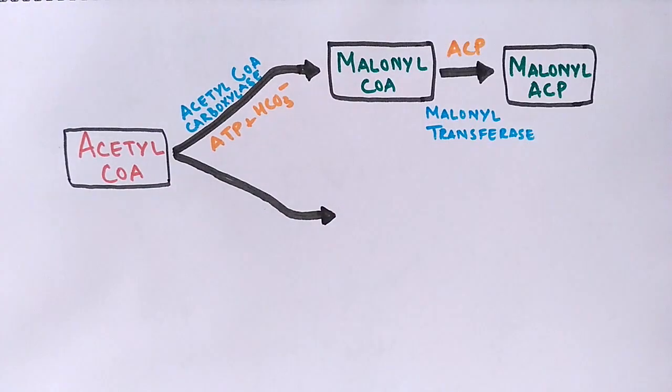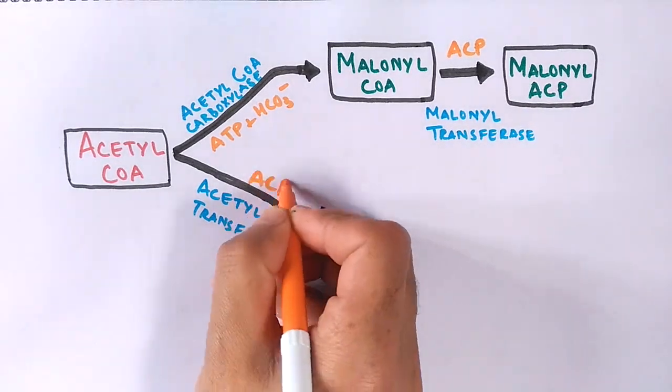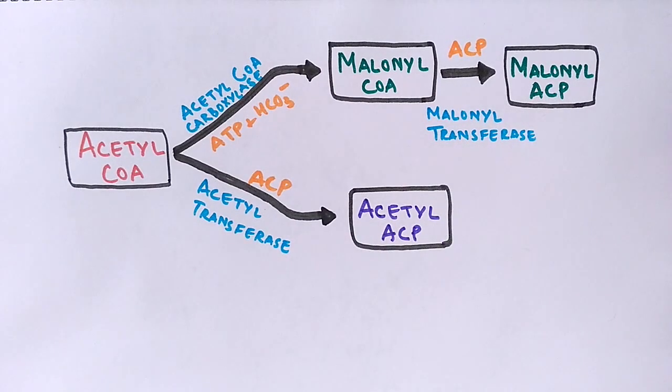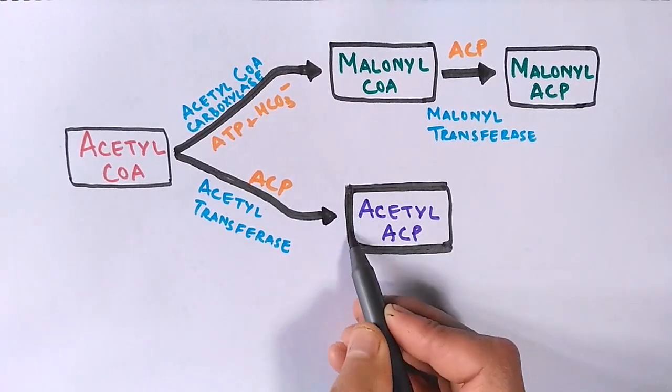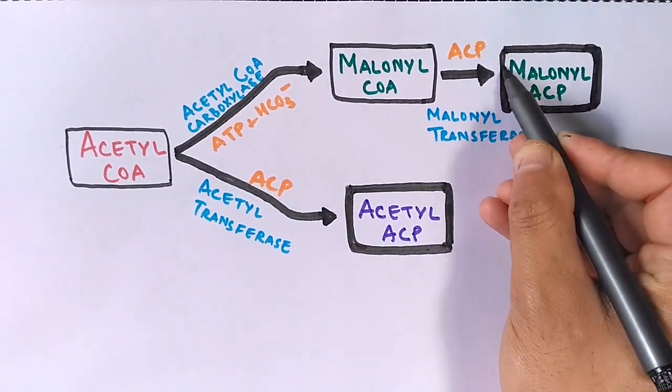On the other hand, this acetyl-CoA goes through a process in presence of acetyl transferase and ACP, and gives us acetyl-ACP molecule. Now in cytosol we have two types of molecules from acetyl-coenzyme A: acetyl-ACP and malonyl-ACP.